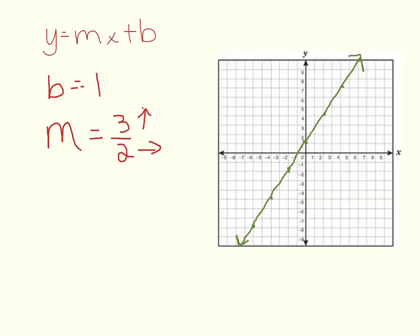And now that we have our slope and our y-intercept, we can now write the equation: y equals 3 halves x plus 1.